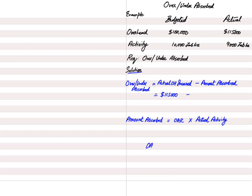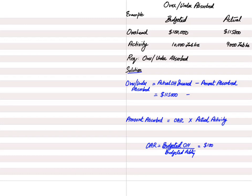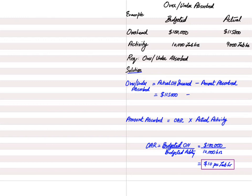OAR is the overhead absorption rate, calculated as budgeted overhead divided by budgeted activity. The budgeted overhead is $100,000 and the budgeted activity is 10,000 labor hours, giving an OAR of $10 per labor hour. This means for every hour of labor worked, the estimated overhead charged is $10.